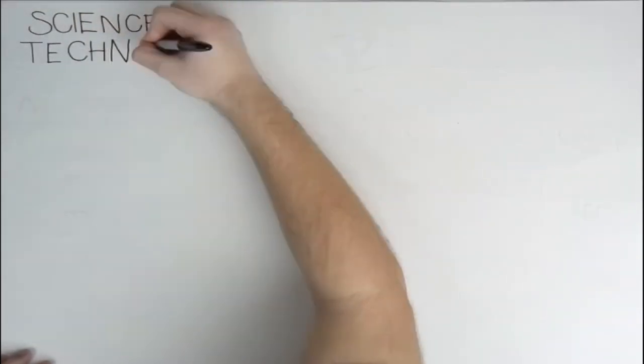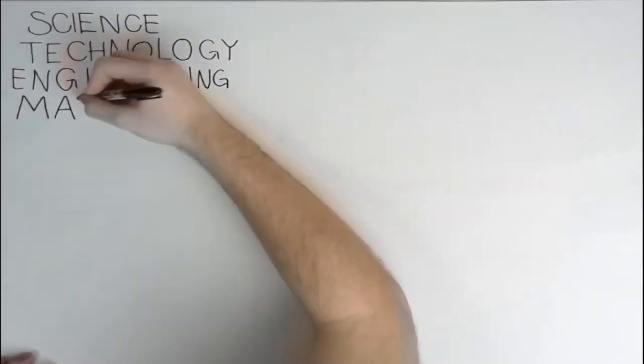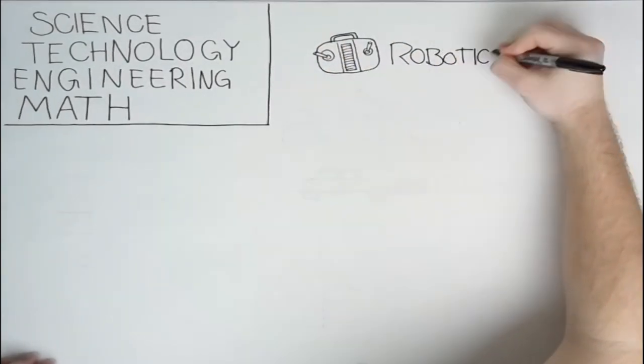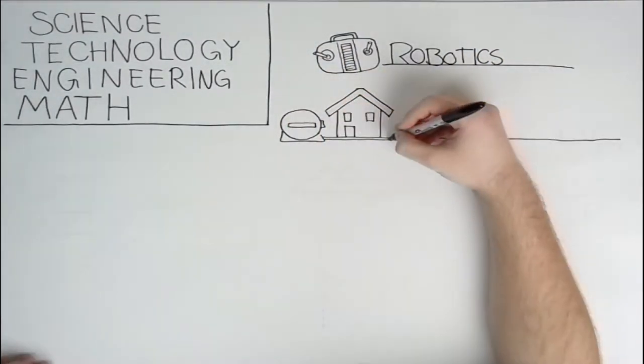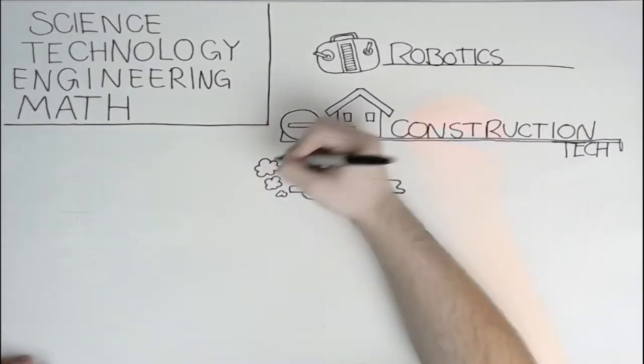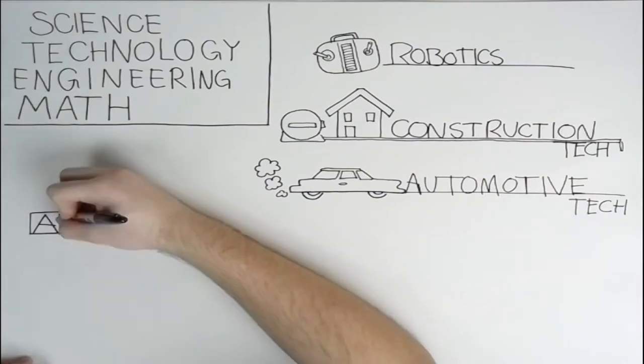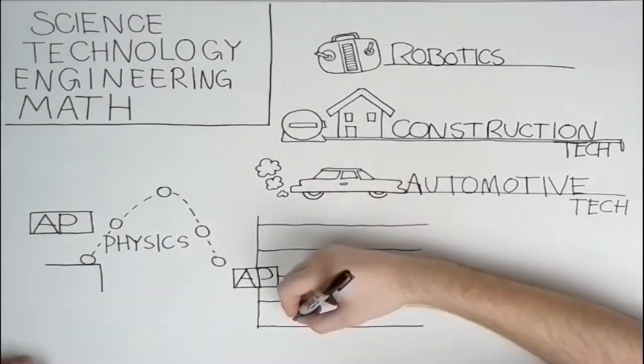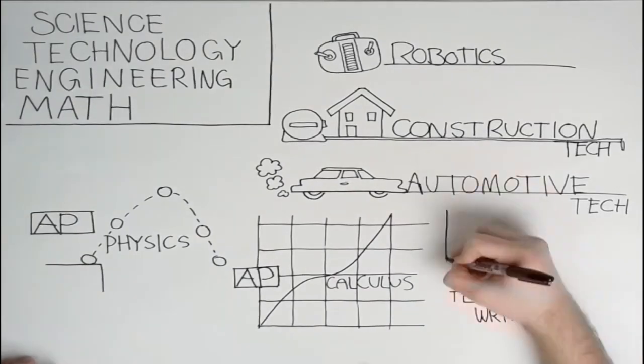Next up, we have Science, Technology, Engineering, and Math. STEM includes classes in engineering and robotics, construction technology, automotive technology, and spatial technology, also known as GIS mapping. Some corresponding academic classes in this institute are AP calculus, AP physics, and technical writing.